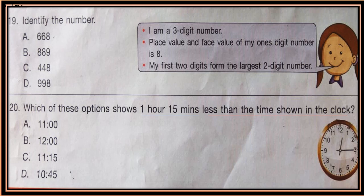Question 20: Which of these options shows 1 hour 15 minutes less than the given time shown in the clock? See the time shown in the clock, calculate the time 1 hour 15 minutes less than this given time, and go back 1 hour 15 minutes before the given time.